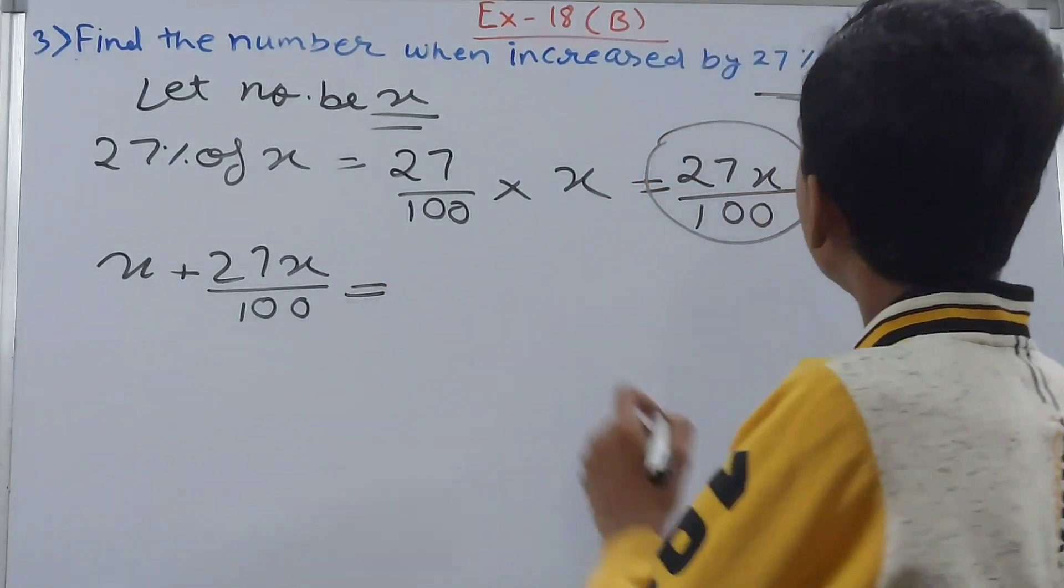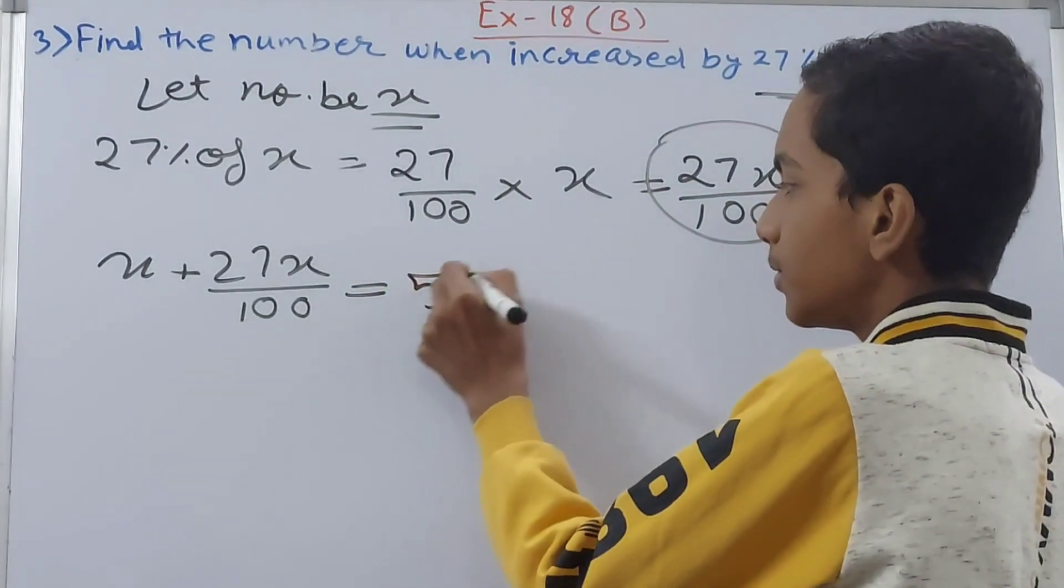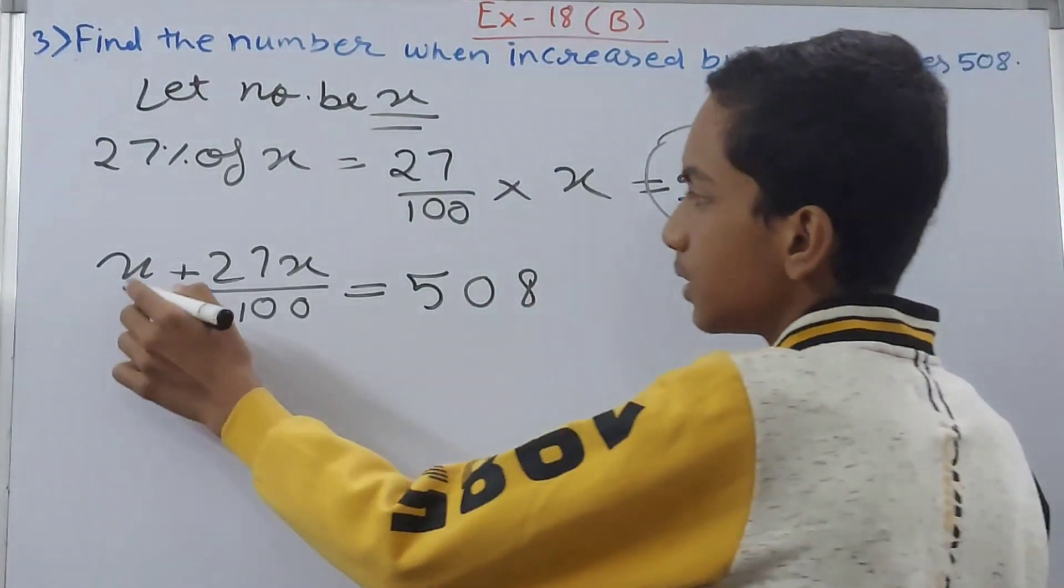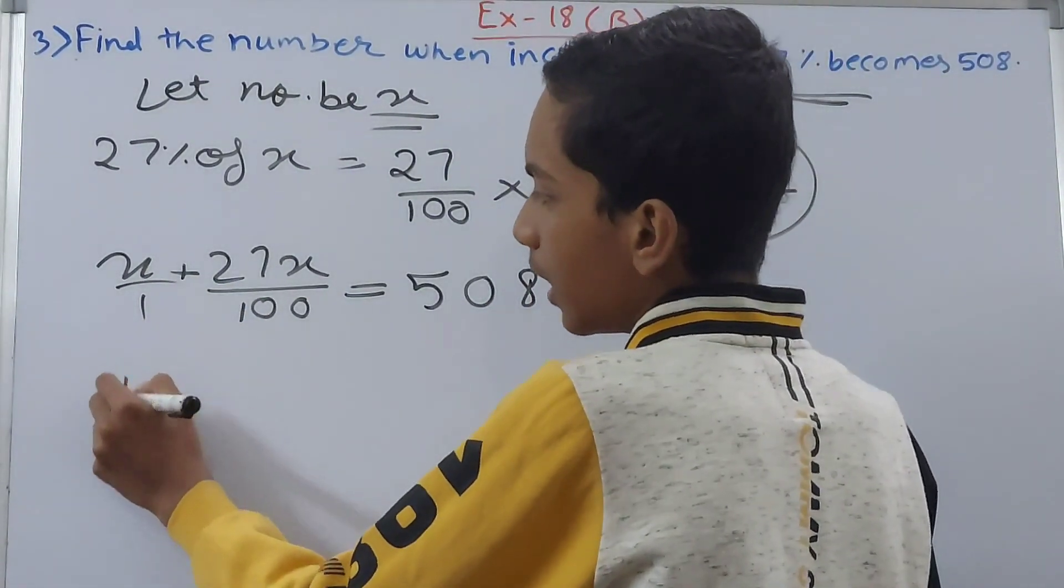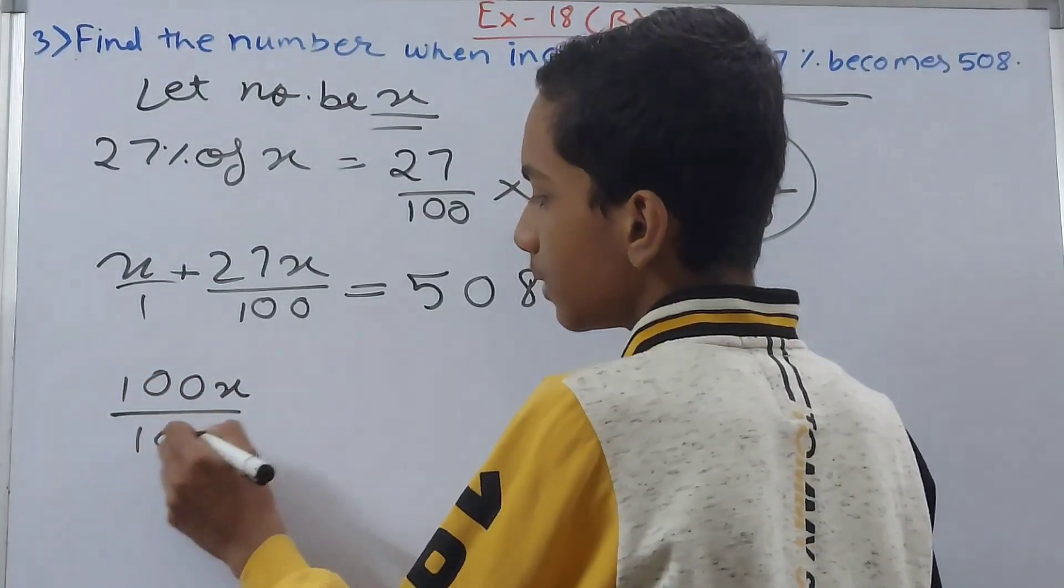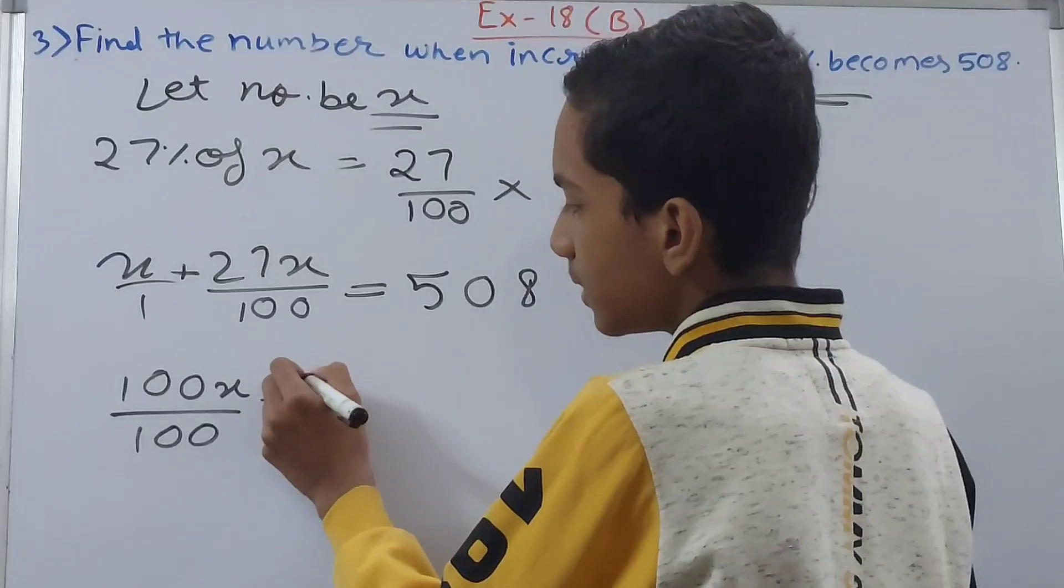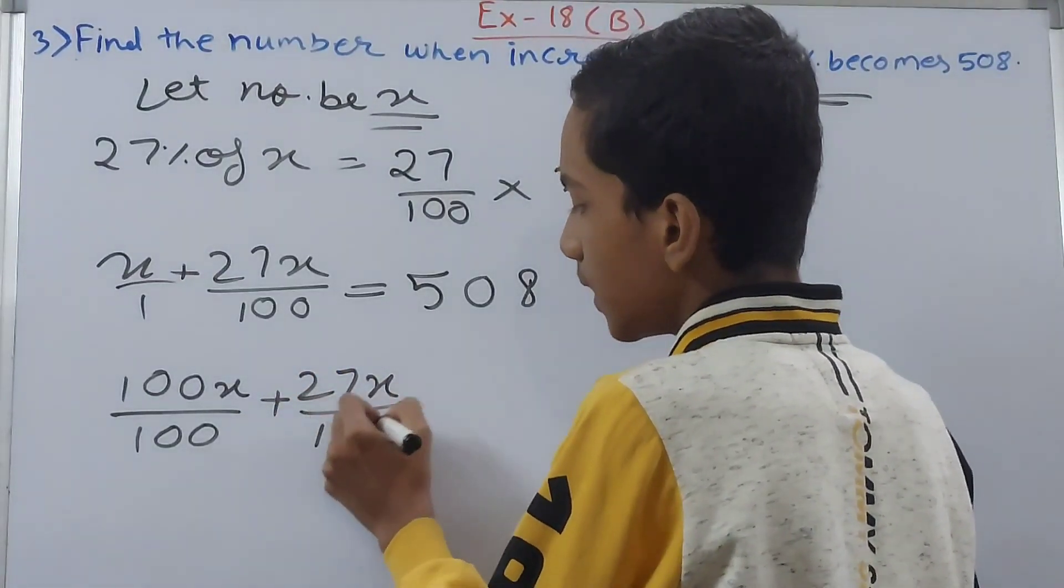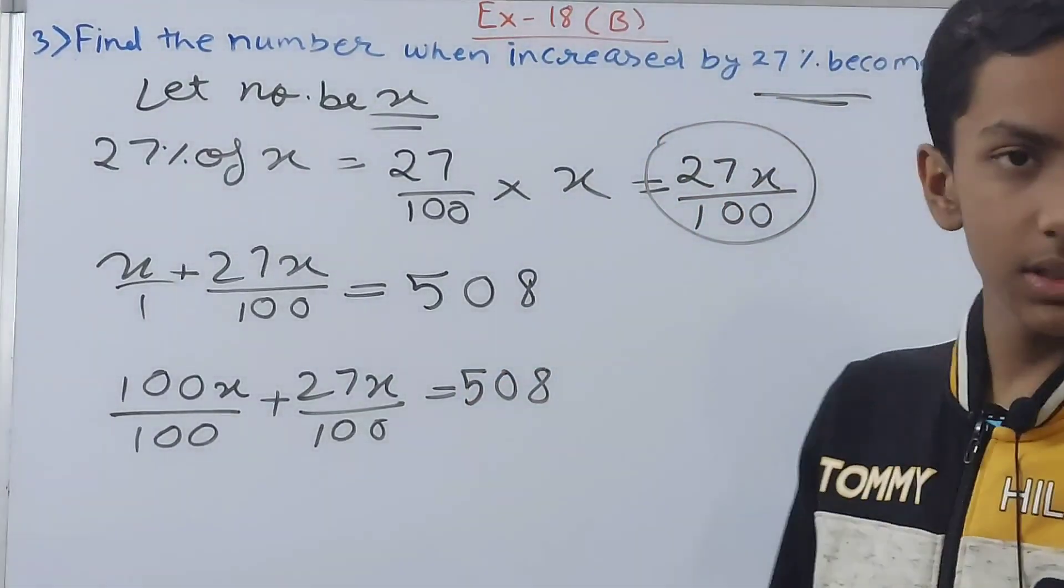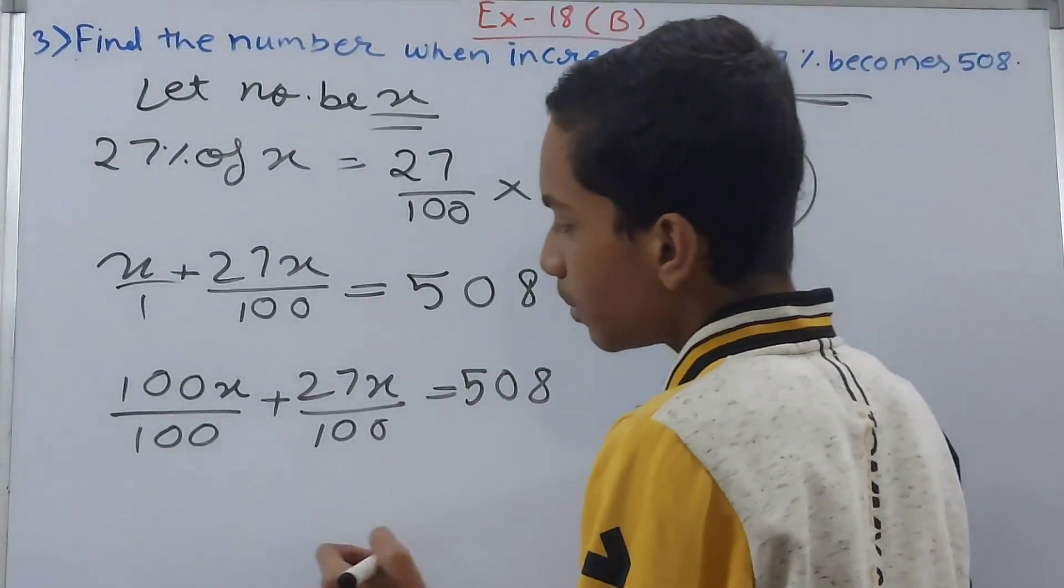So we can write this as x plus 27x upon 100 equals to what? What did we get here? 508, right? So becomes 508. Now solve it. So this is 1, so we get here 100x upon 100 plus 27x upon 100 equals to 508.